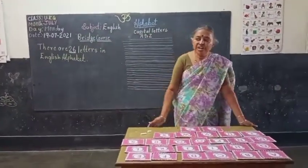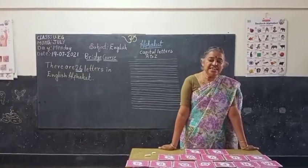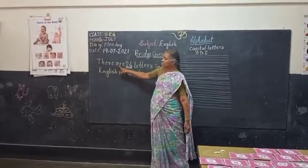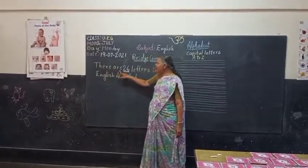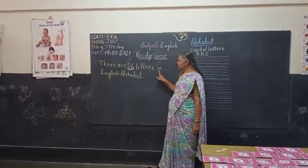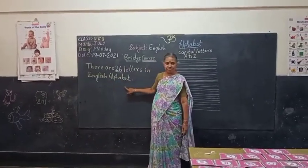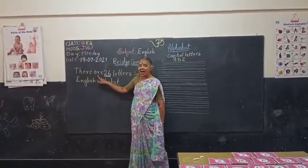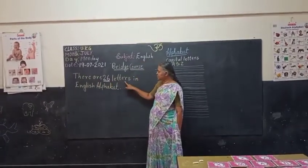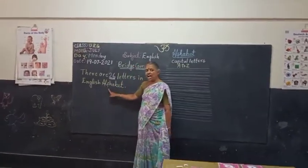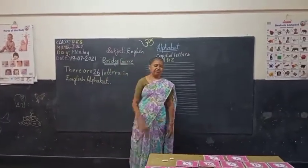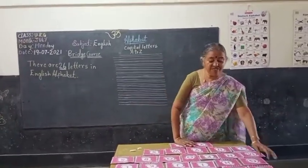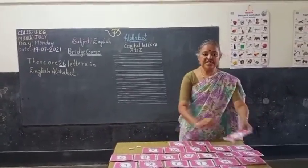How many letters are there in English? There are 26 letters in the English alphabet. Repeat once again: there are 26 letters in the English alphabet. Before that, we can study A for apple, children.